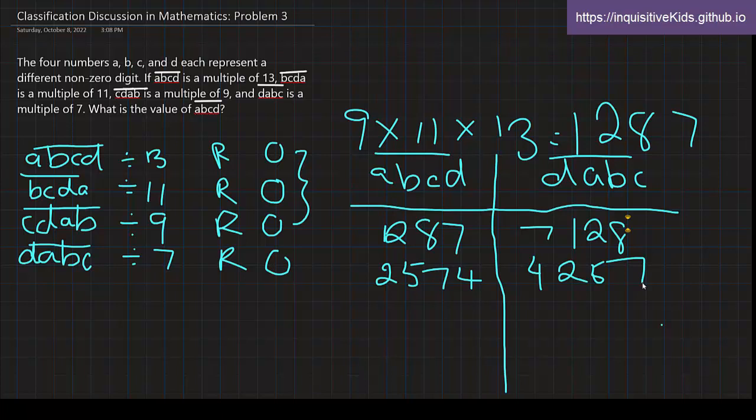And now, what about 3,861? Well, this would be in turn 1,386. And if you try this out, it is indeed divisible by 7. So our final answer would be 3,861.